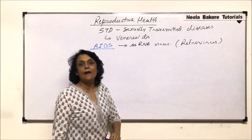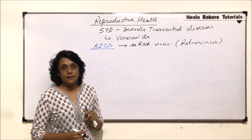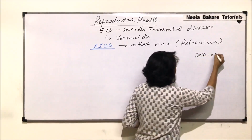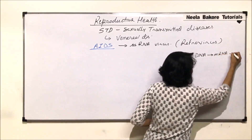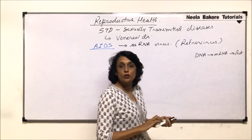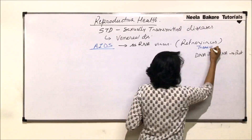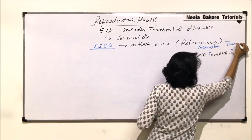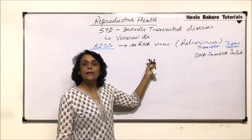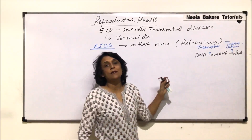In case of retroviruses, along with the genetic material, there is one more thing which is required — a special enzyme. In the normal case, it is DNA which gets transcribed to form mRNA, and mRNA is then translated to form proteins. These two processes are known as transcription and translation. In case of retroviruses, the genetic material is RNA. The process DNA to mRNA to protein is known as the central dogma.